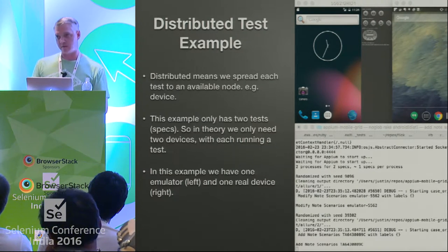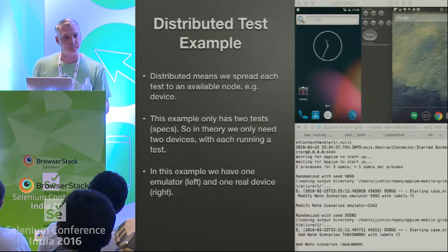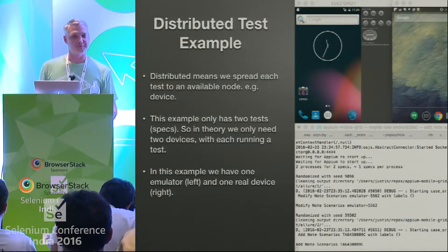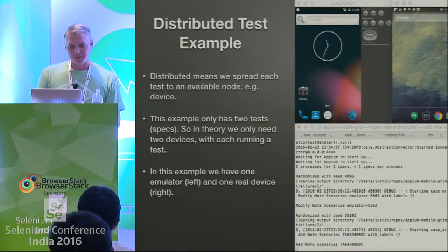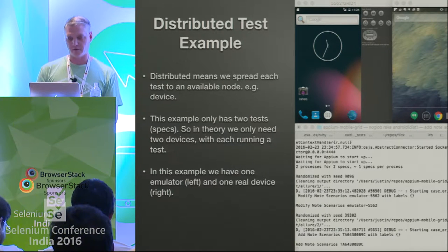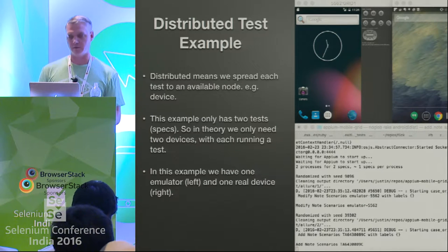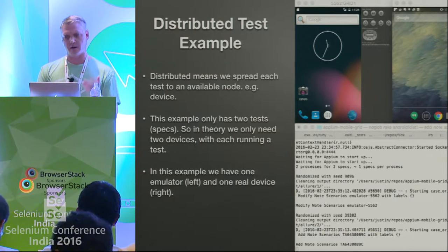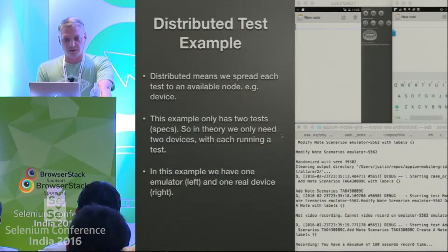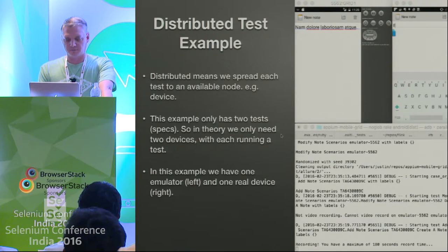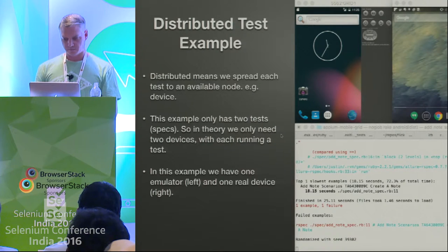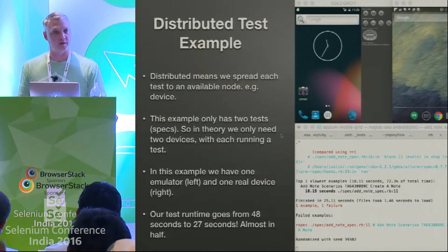Distributed testing: distributing the tests to separate devices is the fastest approach. We'll run each test on a separate device — in our example we have two tests so we only need two devices, one emulated on the left and the device screencasted on the right. It's only 20 seconds. Our runtime went from 48 seconds to 27 seconds — almost cut in half.